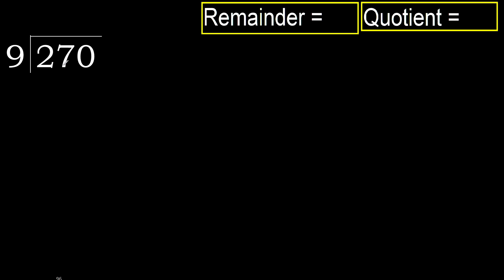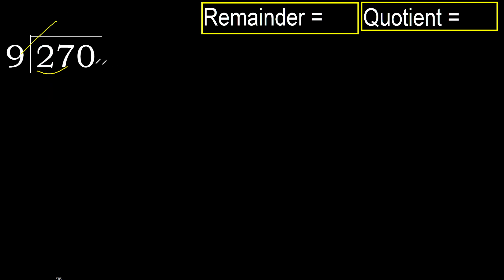270 divided by 9. 2 is less, therefore next. 27 is not less, therefore with 27. 9 multiplied by which number is nearest to 27?